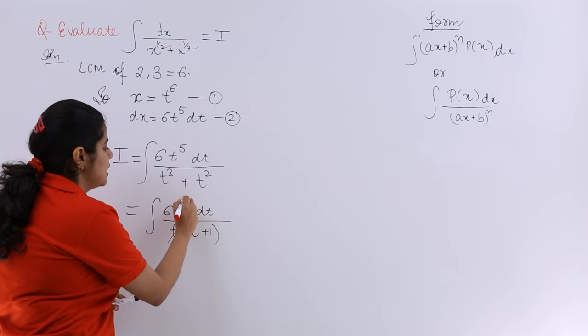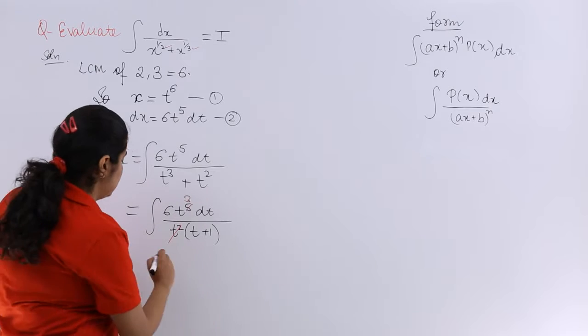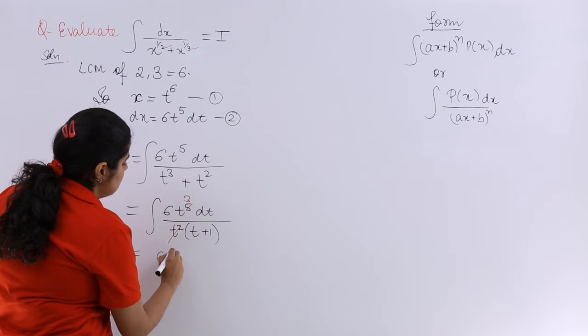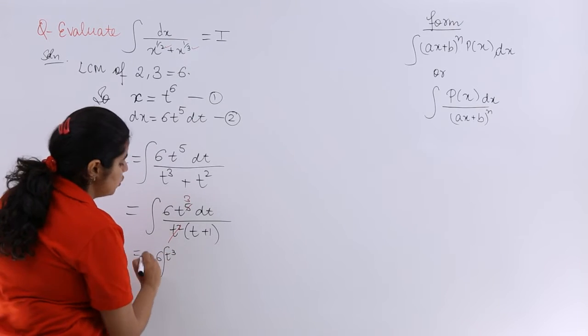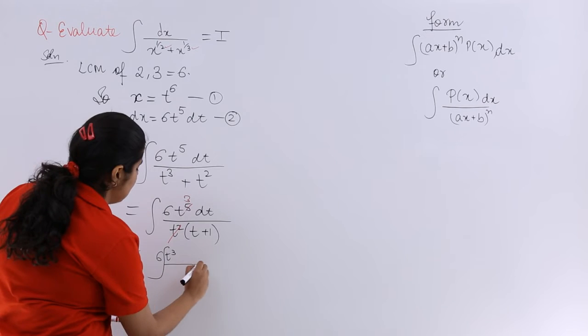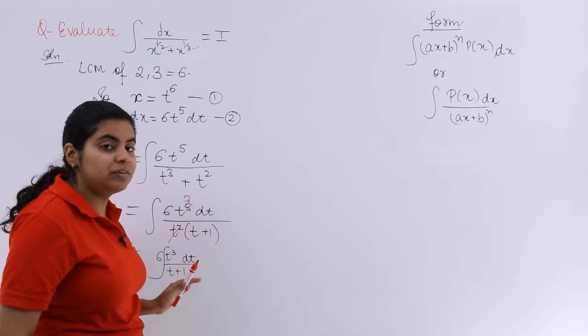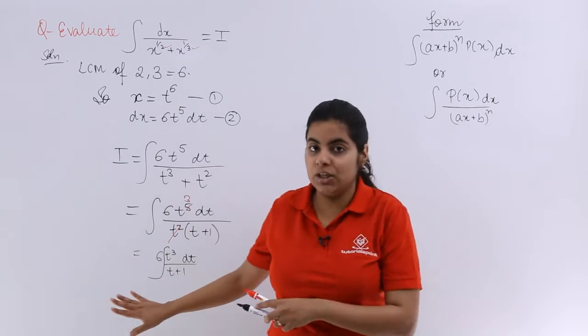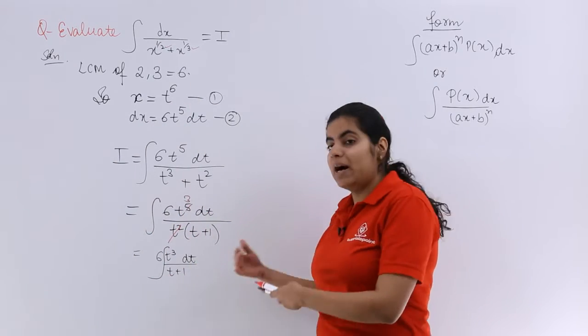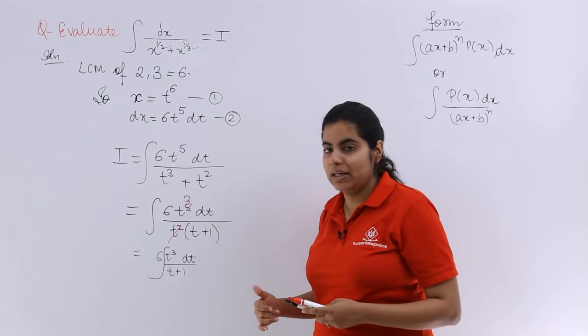Now cancel whatever cancels. So you have 6t cube. So it is nothing but 6t cube wherein 6 is a constant can be taken as outside and it is t plus 1 dt. Now if this question is till here only, till here I have understood rest part, these type of questions we have already done.